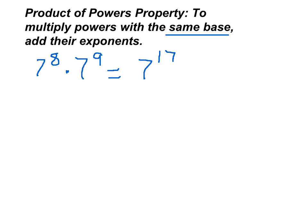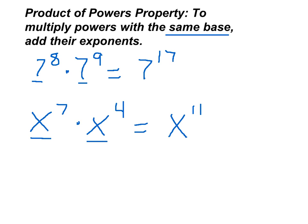With a variable it looks like this. If you have x to the 7th power times x to the 4th power, you simply add the exponents and you get x to the 11th power. It's very important to remember that you can only do this with the same base.